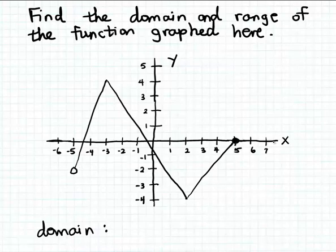Likewise, over on the right-hand side of the graph, we can't use a number larger than 5 as input to the function. Since the graph doesn't extend to the right of 5 along the x-axis, we wouldn't be able to find a matching output value for numbers larger than 5. For instance, if we try to use 6 or 7 as input, we won't be able to find a matching output value. So positive 5 is going to be a boundary value for the domain of this function.